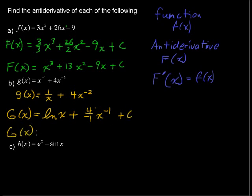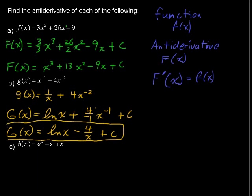G of x, capital G of x, the antiderivative, equals the natural log of x minus, because 4 divided by 1, minus 4 over x, I can write it in that fashion now, because x to the negative 1 is the same as 1 over x, plus c. I'll put a box around that just to make sure it doesn't get confused with the line above it.